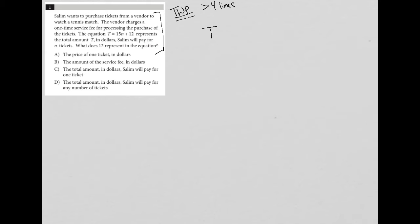So anytime I see an equation, I just like to rewrite it. So T equals 15N plus 12. Don't forget the question does tell us that there's a one-time service fee, which really must be the 12 here.